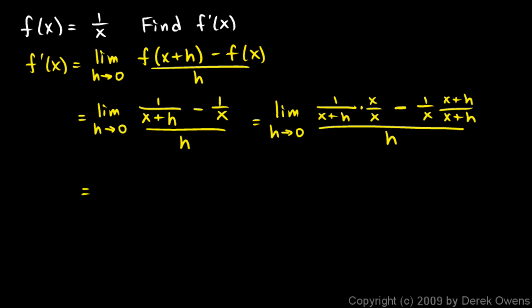So now we can write these two fractions as a single fraction. So let's come down to the next line and write the limit as h approaches 0. And what I'll get here when I combine these fractions. These fractions are both going to have a denominator of x plus h times x.